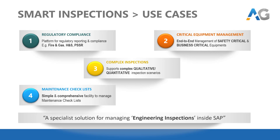The fourth use case is maintenance checklist, quite common in the energy industry. The practice is to store them outside SAP, maybe in MS Excel or some other systems, because standard SAP doesn't have a structured way of recording these in plant maintenance. That gap in SAP has now been filled by Smart Inspections. It allows companies to plan, manage and report maintenance checklists with full traceability and history tracking.